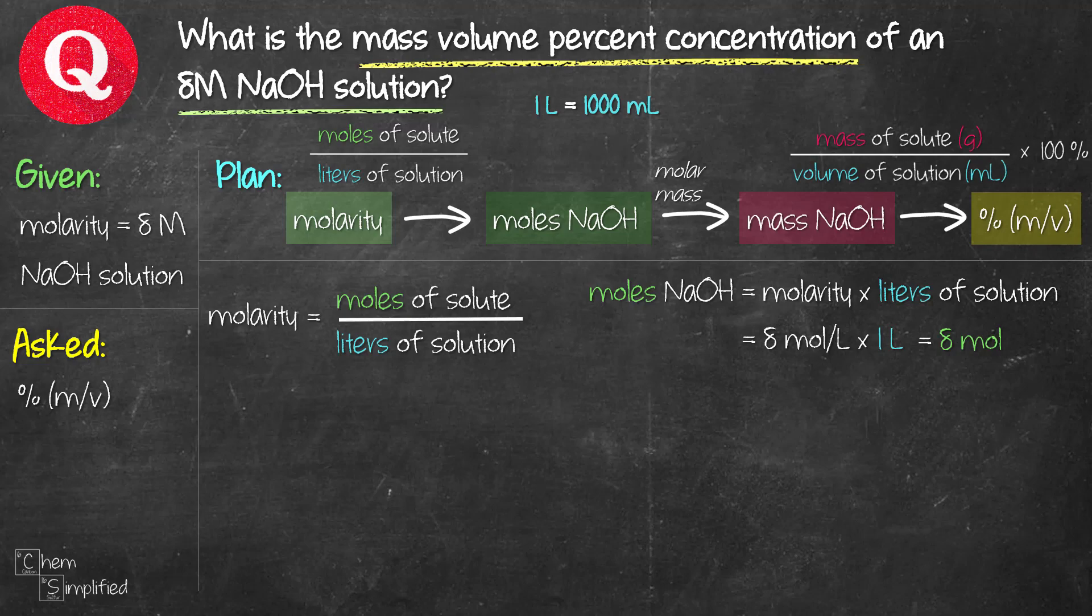Now that we have the moles of NaOH, we can go ahead and use that along with molar mass to figure out the mass of NaOH. So mass of NaOH is what we want to find. And we start with that 8 moles of NaOH. I'm going to use a dimensional analysis method to figure out the mass. So I just multiply and draw a line across. Since I'm going from moles to mass, I'm going to put moles at the bottom so that they can cancel out. And since I'm figuring out the mass, I'm going to put the mass, the unit which is grams, on the top.